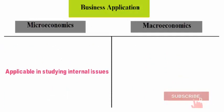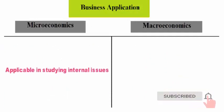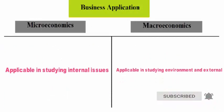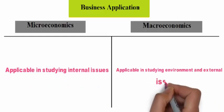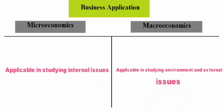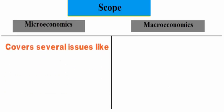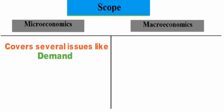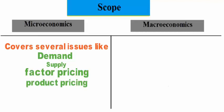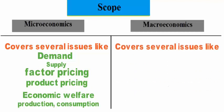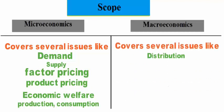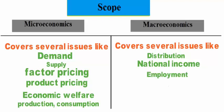Fourth: Business application. Microeconomics is applicable in studying internal issues. Macroeconomics is applicable in studying environment and external issues. Fifth: Scope. Microeconomics covers several issues like demand, supply, factor pricing, product pricing, economic welfare, production, and consumption. Macroeconomics covers several issues like distribution, national income, employment, money, and general price level.